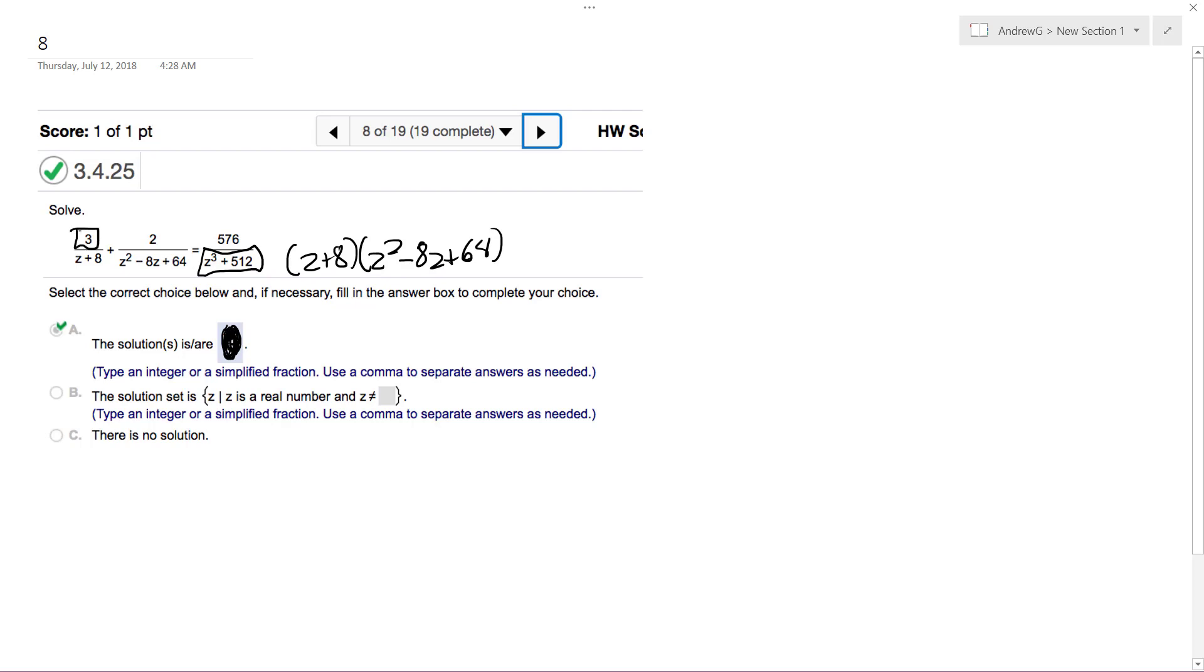So all we do here is get common denominators across the board. On top there we get 3 times z squared minus 8z plus 64. Looks a little daunting, but it's not too bad. Then plus 2 times z plus 8, and that's just equal to 576.